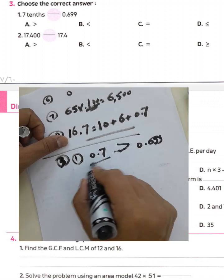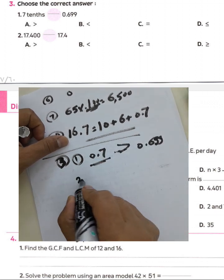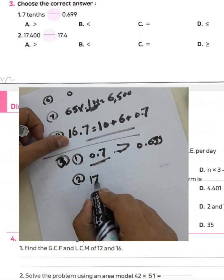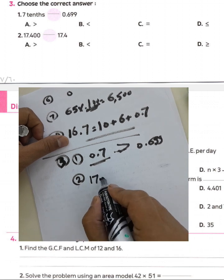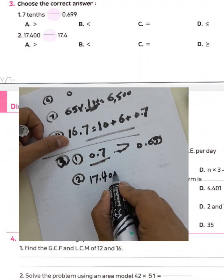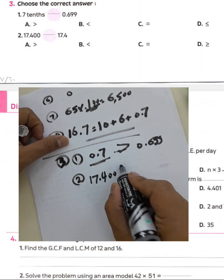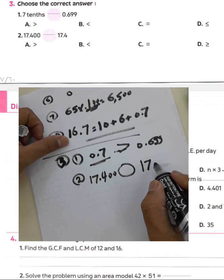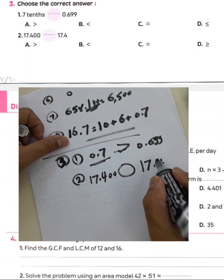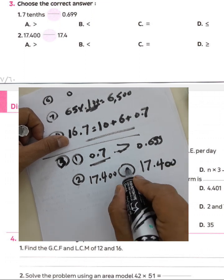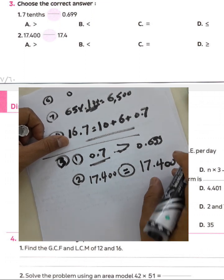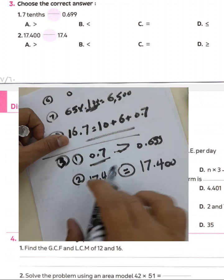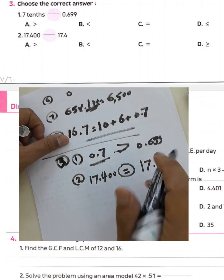Question number two: seventeen and four hundred thousandths — written with four tenths equal, placing double zero gives the two numbers equal in value.